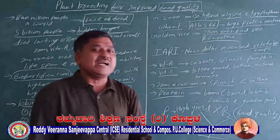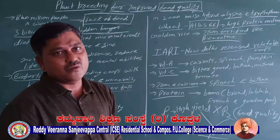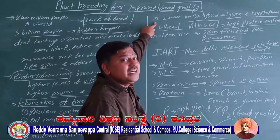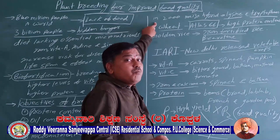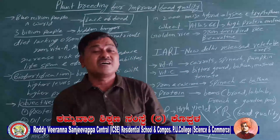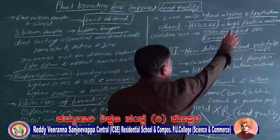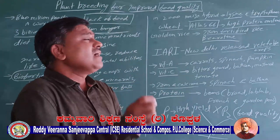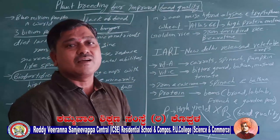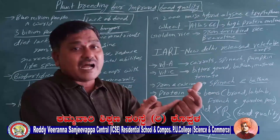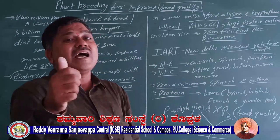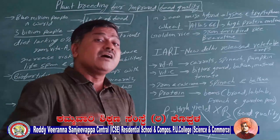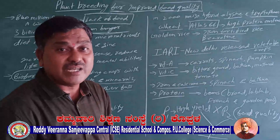What are examples of crop plants whose quality has been improved? In 2000, a maize hybrid was developed in which the content of amino acids lysine and tryptophan was doubled. Before 2000, maize plants had less lysine and tryptophan. By crossing a high-yielding maize plant with a plant having more amino acids, we got a hybrid with double the lysine and tryptophan content.